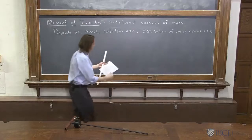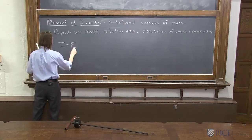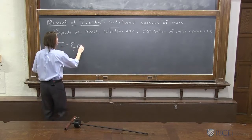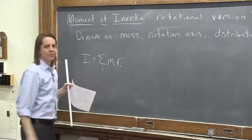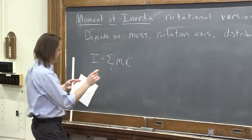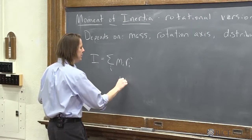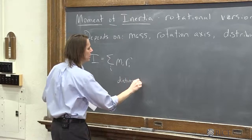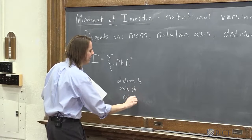So let's look at our formula. We remember that I was equal to the sum over all the little mass elements of each mass element times where it is, how far it is from the axis of rotation. So this is really the distance to the axis of rotation. So defining that axis is very important.